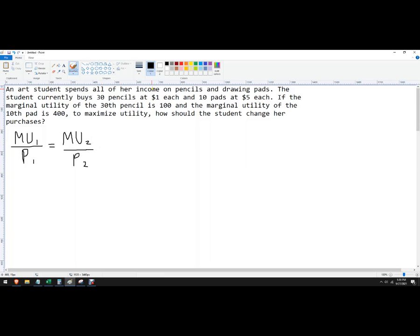So we're told there's this art student and they want to spend all of their income, or they're already doing that on pencils and drawing pads. So they currently buy 30 pencils. They're already buying a quantity of 30 at $1 each. So let's use our formula here. $1 is the price of pencils. And then what is our marginal utility? The 30th pencil is 100.